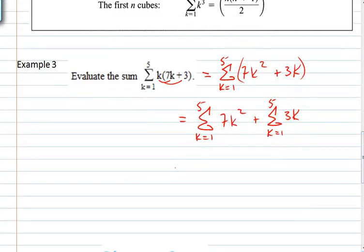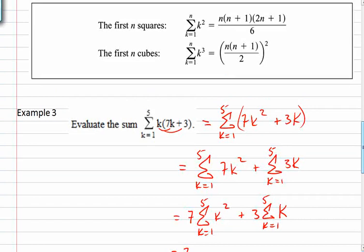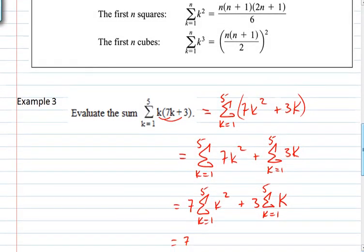Furthermore these constants can come out. This is going to be 7 times the sum k equals 1 to 5 of k squared plus 3 times the sum k equals 1 to 5 of k. So this was 7 times and if you look back at the formula for the first square it's n times n plus 1 so that's going to be 5 times 5 plus 1 which is 6.